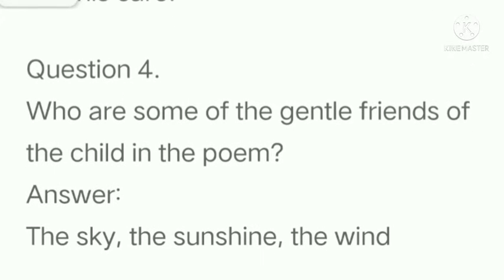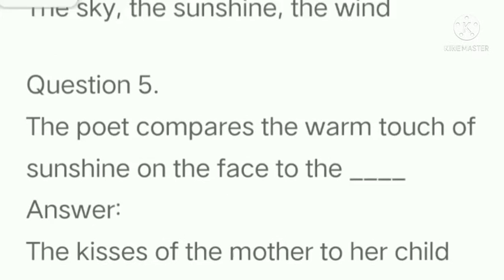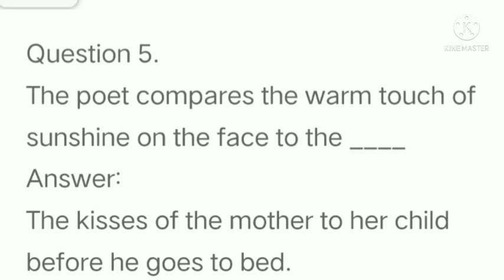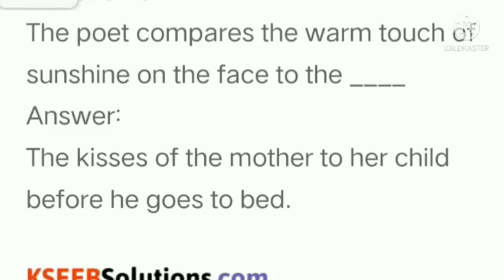Question number 4: Who are some of the gentle friends of the child in the poem? Answer: The sky, the sunshine, the wind. Question number 5: The poet compares the warm touch of sunshine on the face to the dash. Answer: The kisses of the mother to her child before he goes to bed.